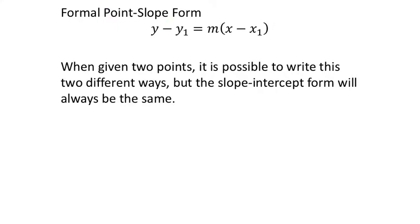Why can we do it with two points? Just like we saw in 1.3, if they give us two points, we should be able to find the slope. With ordered pairs, you have the x1 and y1, which represents the x value and y value of some ordered pair they have to give us. If you're given two ordered pairs, you just have to choose one of them to use.